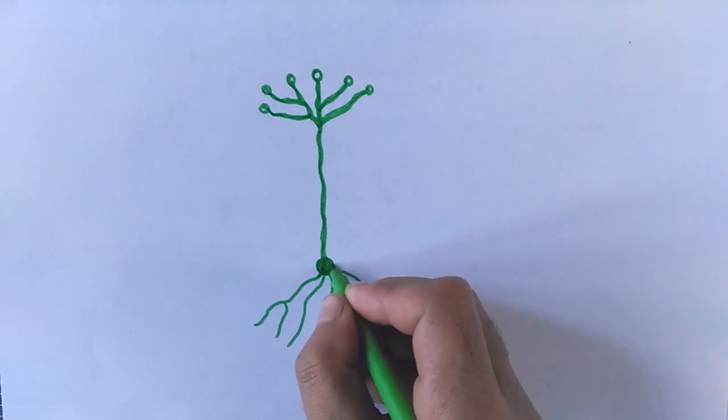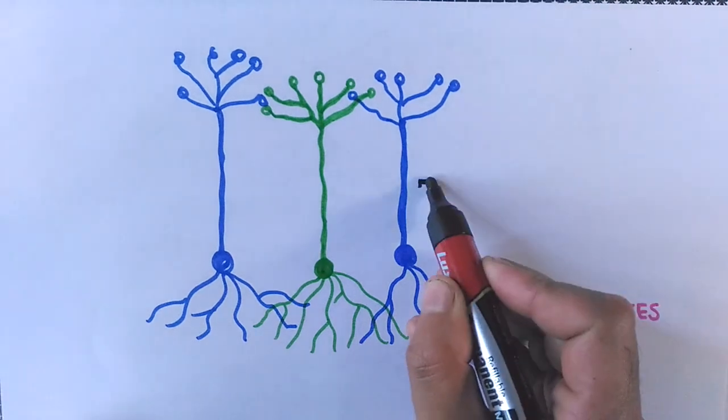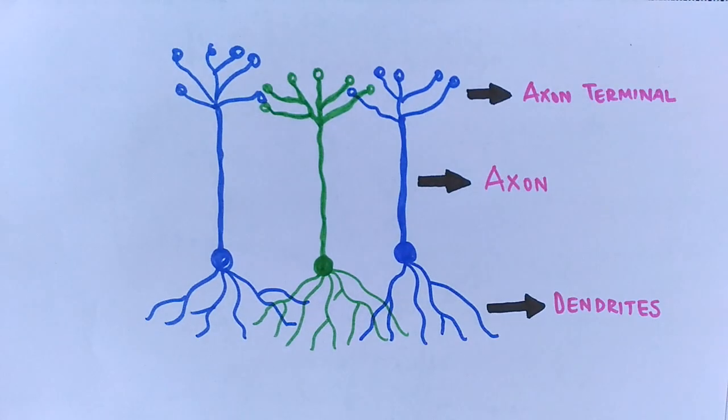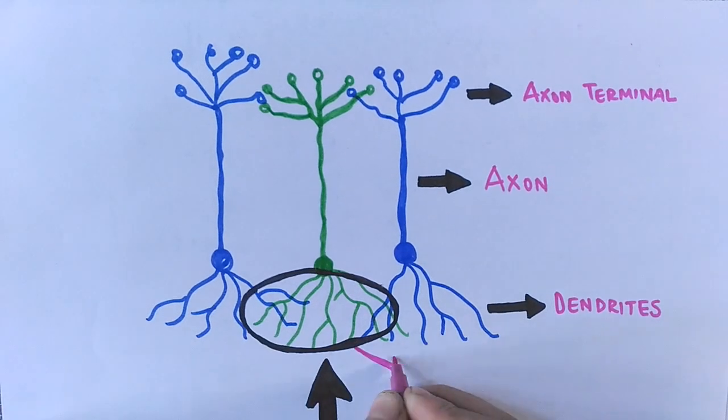Now we see there are three neurons: one in the center with green color and two blue neurons surrounding it. In this diagram, the green neuron receives a stimulus, so we call it a point of stimulation.